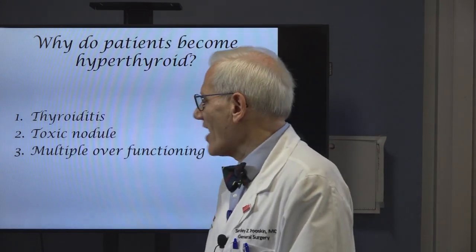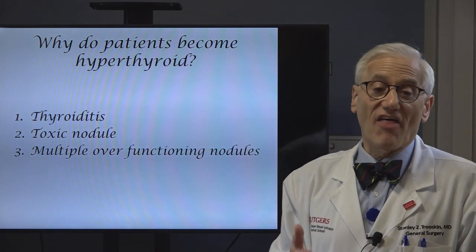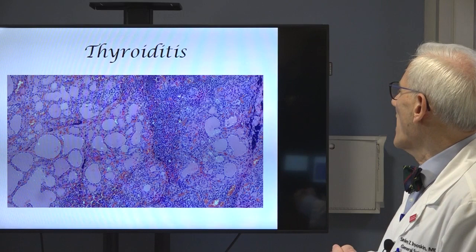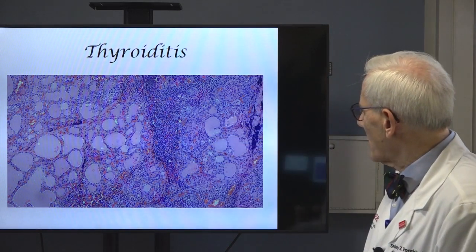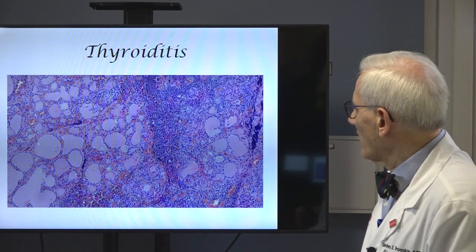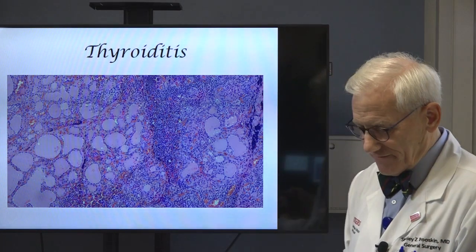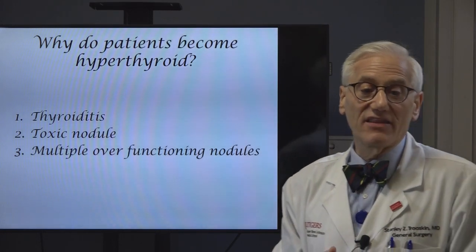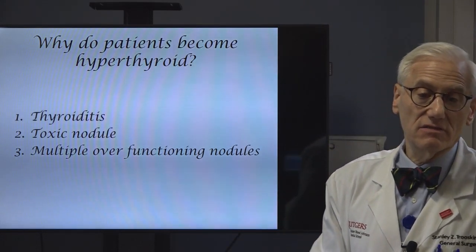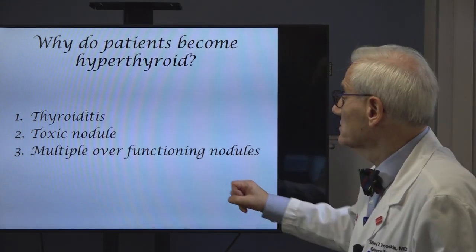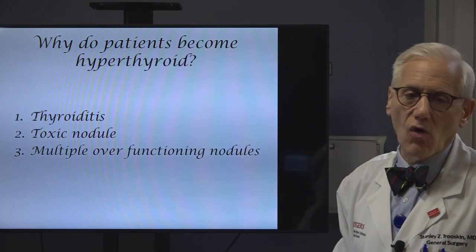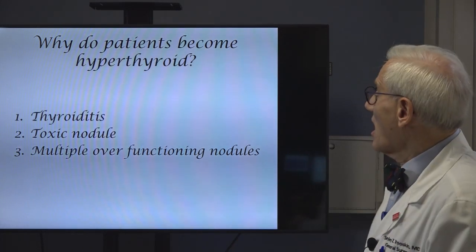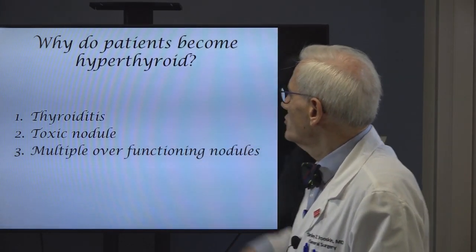Why do people become hyperthyroid? The most common reason is called thyroiditis — inflammation in the thyroid gland. You can also become hyperthyroid because there's one nodule in the thyroid that over-functions, or multiple nodules that over-function. Thyroiditis is the most common cause — the overwhelming number of patients who are hyperthyroid have it due to thyroiditis.